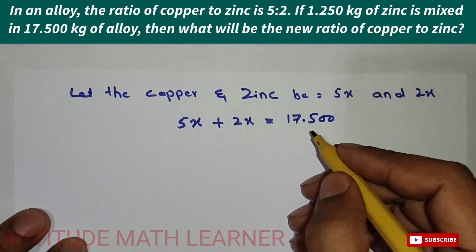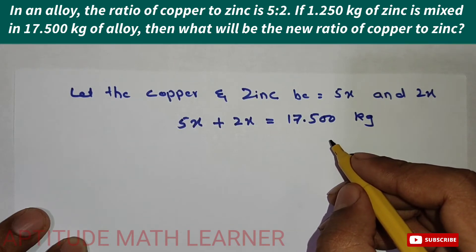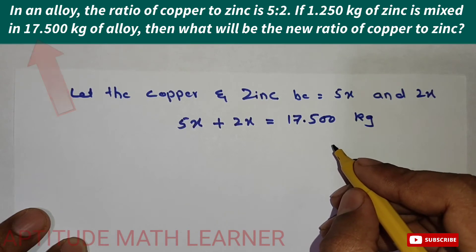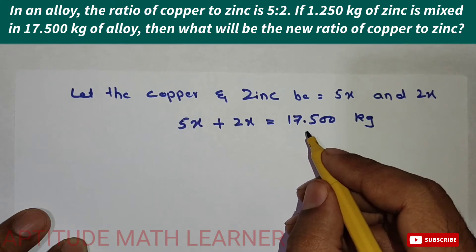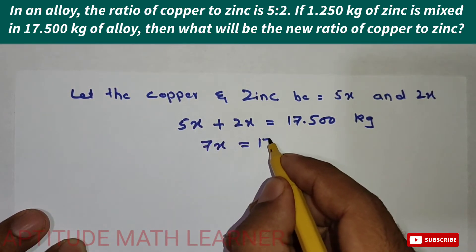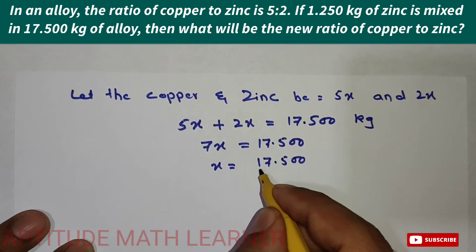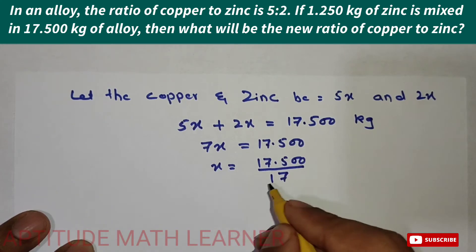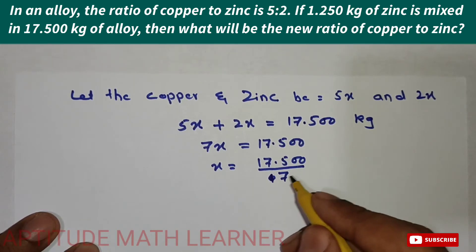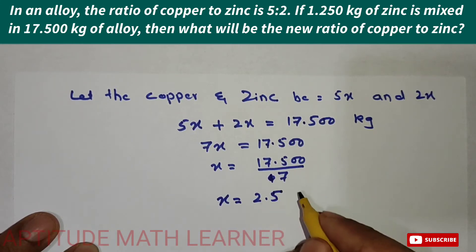So 17.500 kilograms is the total alloy. This gives us 7x equals 17.500, so x equals 17.500 divided by 7. After dividing, we get the value of x as 2.5.